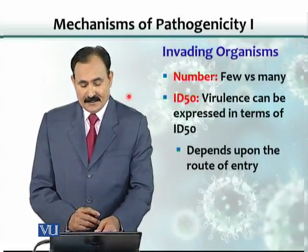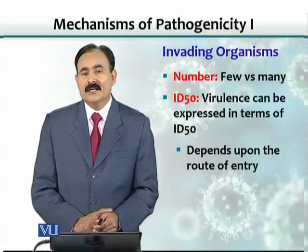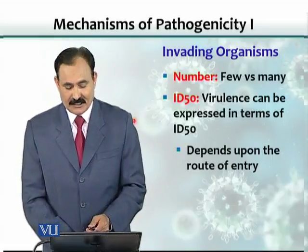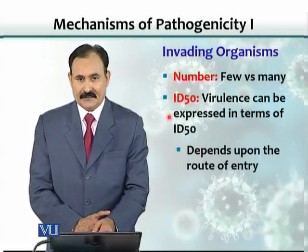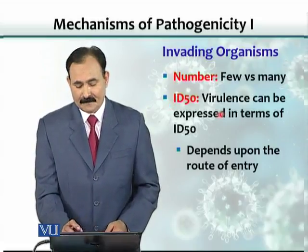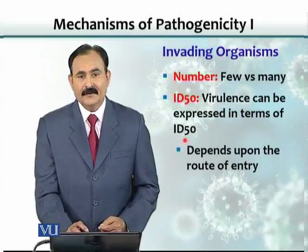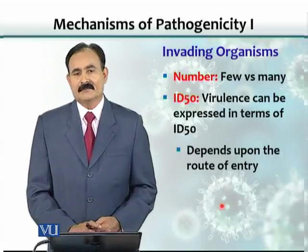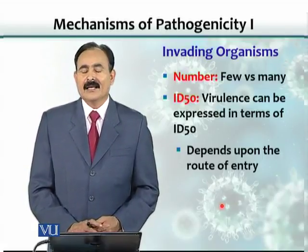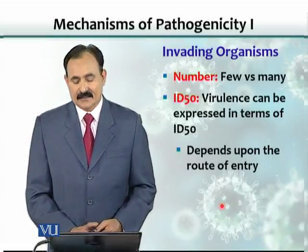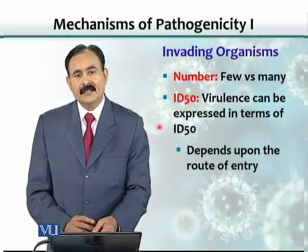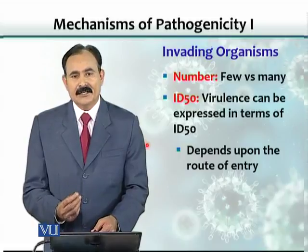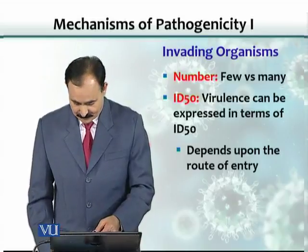The number of organisms matters — too few and disease won't appear; many, and it will. The term ID50, or infectious dose 50, expresses virulence as the number of infectious organisms needed to cause infection in 50 percent of the population. It depends upon the route of entry, so the same organism given through different routes may require different numbers to cause infection.